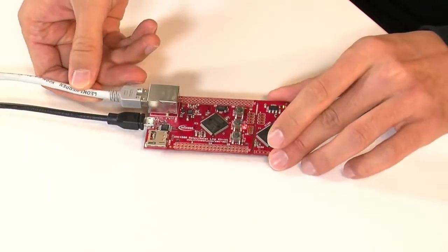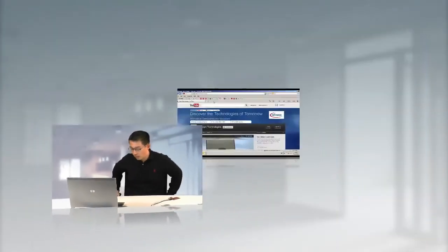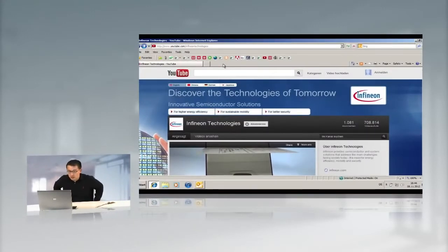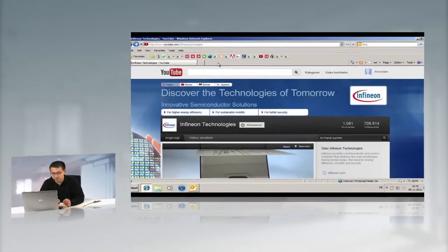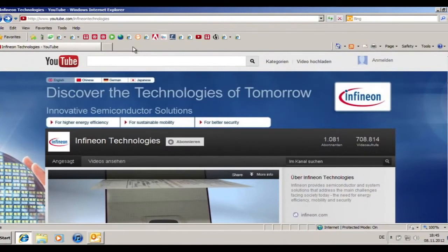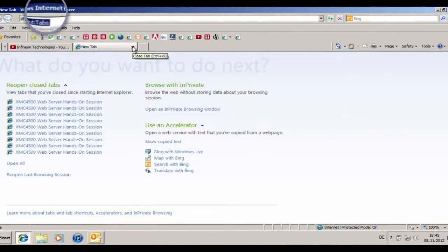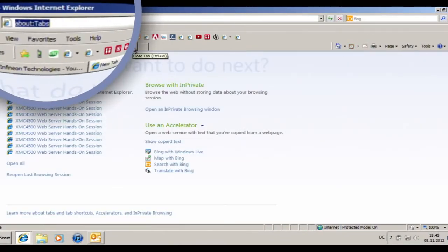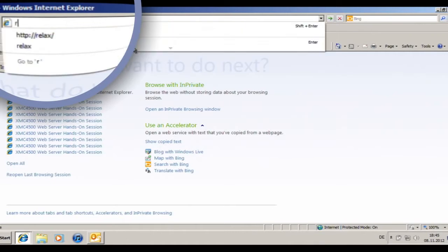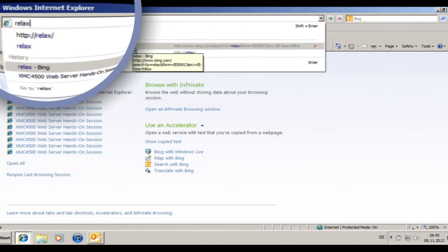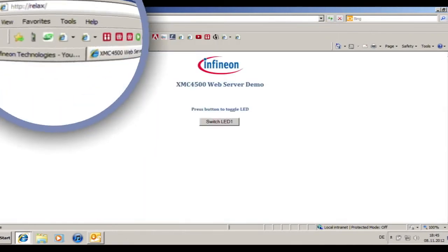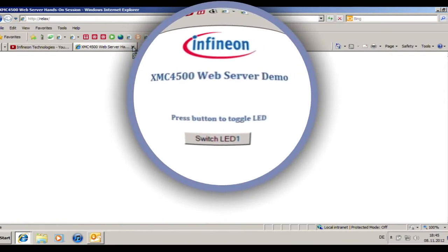And to access the embedded web server I will go to my PC. There you see the browser is already open. I will open a new tab. And if the DHCP and the DNS server is enabled in your IP network, you can just type in relax. And boom, the embedded web server is running here.